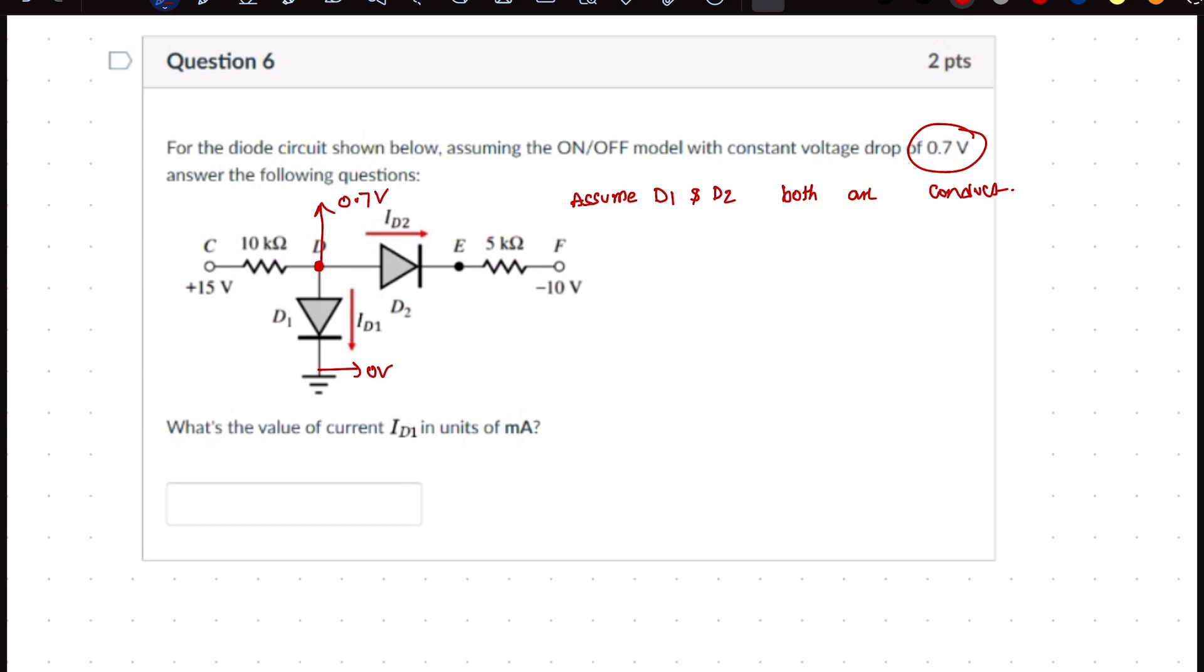If it is 0.7V, the voltage at point E must be 0 volts because we have assumed D2 is also conducting, so the voltage drop must be 0.7 volts. Now the current in this part is (15 - 0.7) / 10, which is 1.43 milliamperes.